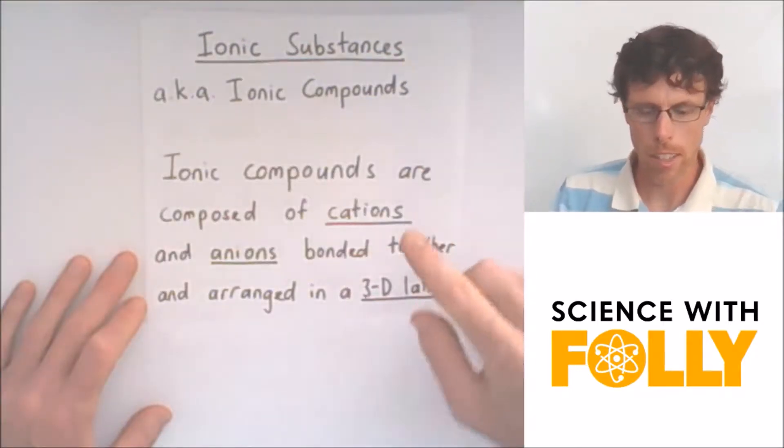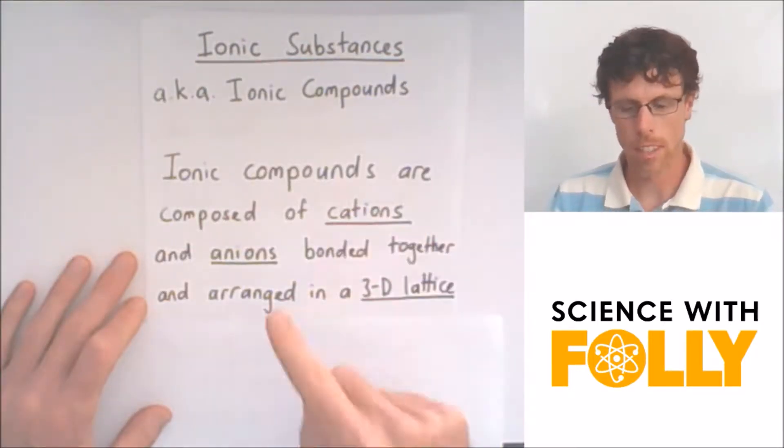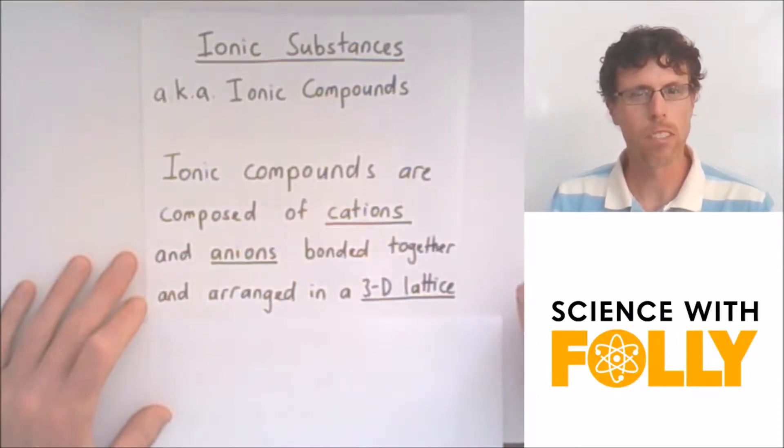Now, ionic compounds are composed of cations and anions bonded together and arranged in a three-dimensional lattice.